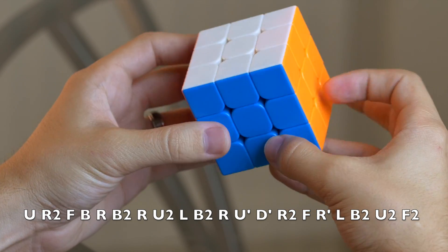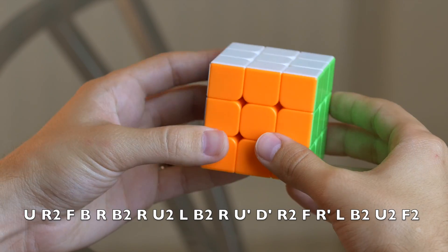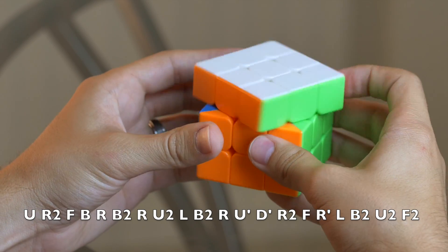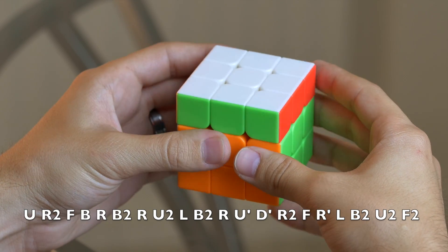Again, with the 3x3 already solved, it doesn't matter what side we start with. We want to go ahead and do this move, which is up, right two times, front.